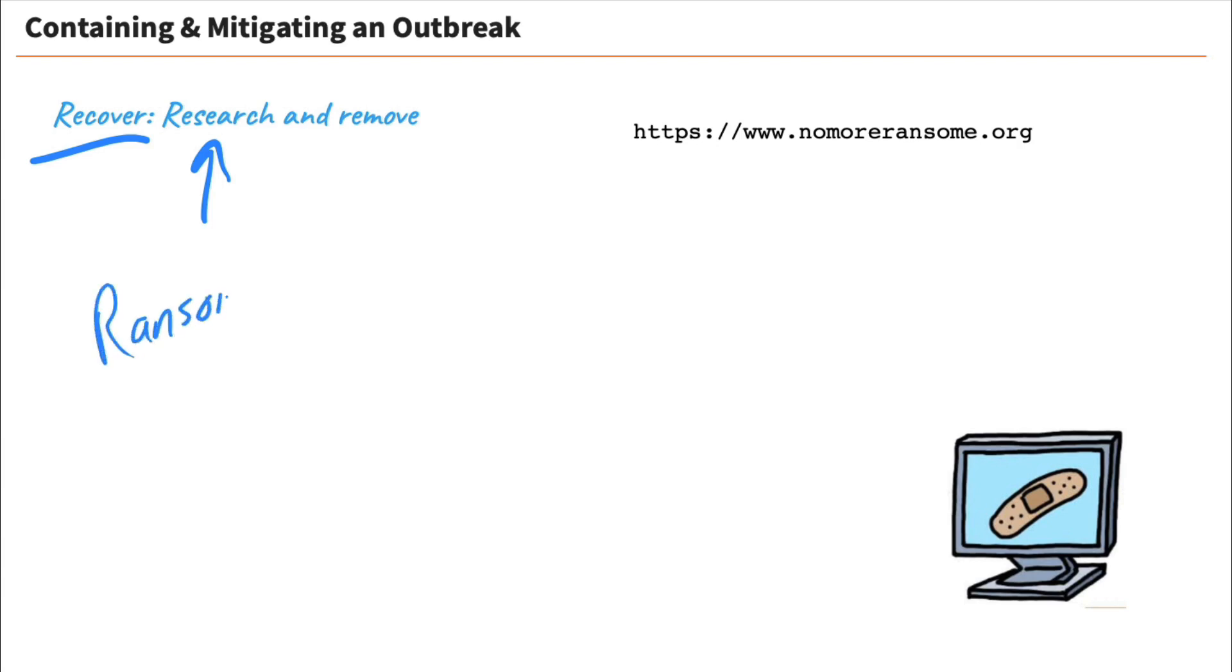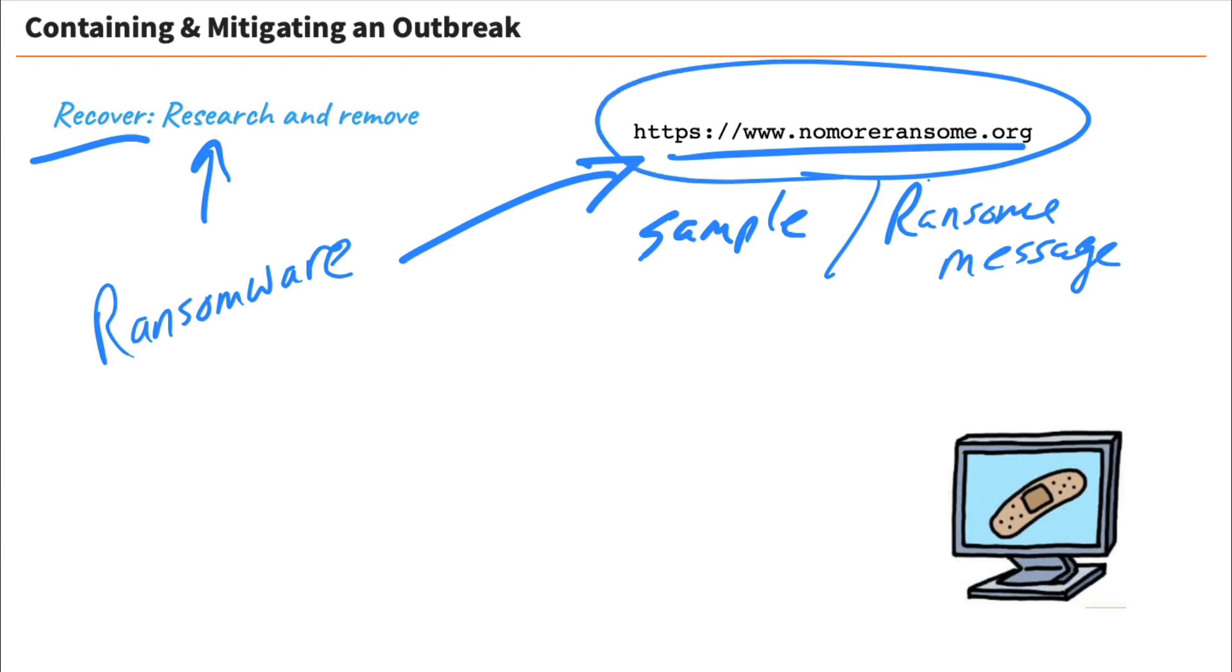Well, I could jump out to nomoreransom.org, and that's a website that you can submit samples of the ransomware, meaning the file itself that caused the infection, or the ransom message that it provides you with on the screen, and this here, nomoreransom.org, will tell you if it's seen it before because it's kind of a database of ransomware that's on the internet, and if it has, it can provide you with the keys, if those are known, so you can recover and decrypt from this ransomware, and additional information as to how to possibly clean up afterwards.